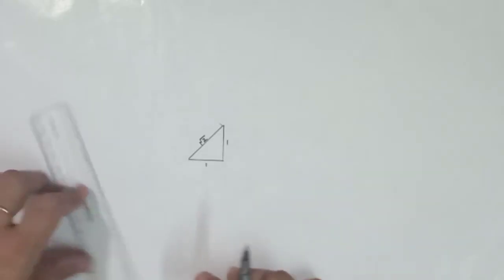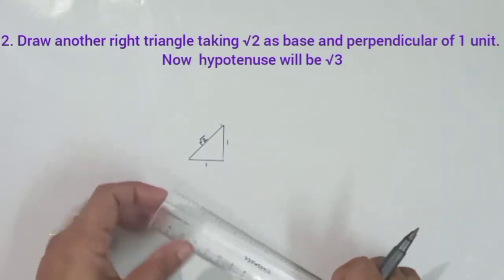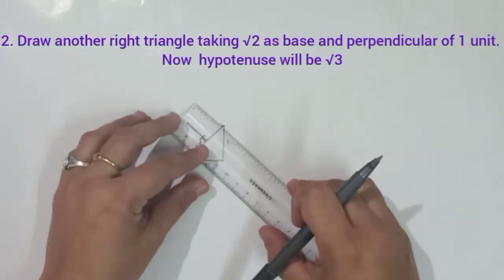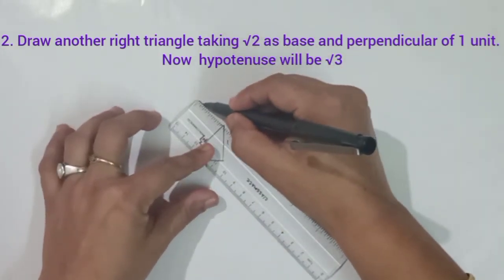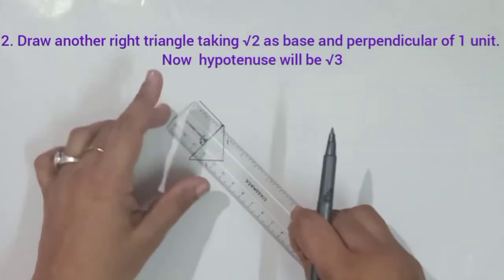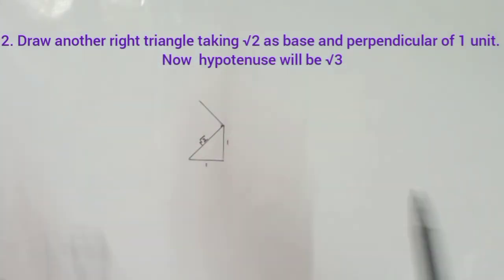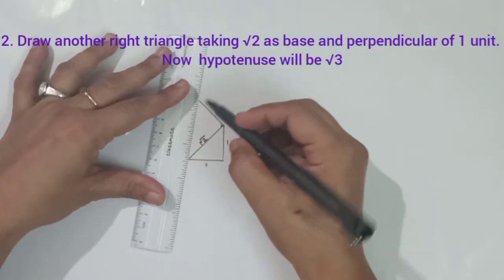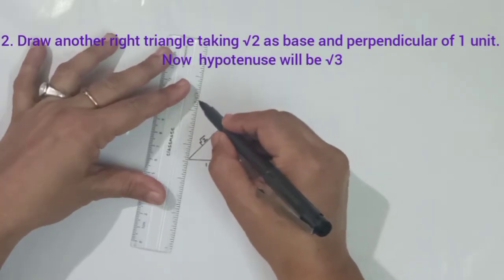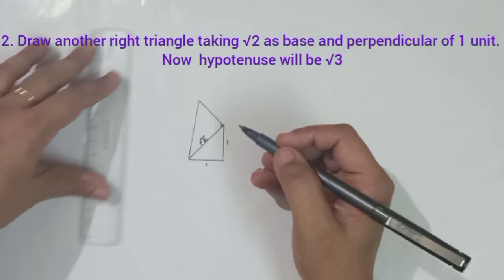Now, draw another triangle whose base will be root 2. You have to draw a right triangle, and the altitude or perpendicular is one unit. Now, the hypotenuse will be root 3, again according to Pythagoras theorem.